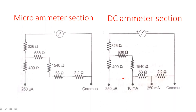Let us redraw these individually. For the micro ammeter section: 250 micro amperes along with the common path. The common path consists of resistors — 2.2 ohms, 53 ohms, 1540 ohms, then the meter. All the separated circuits share this common path: 326 ohms, 638 ohms, 1540 ohms, 53 ohms, 2.2 ohms, and the common meter.